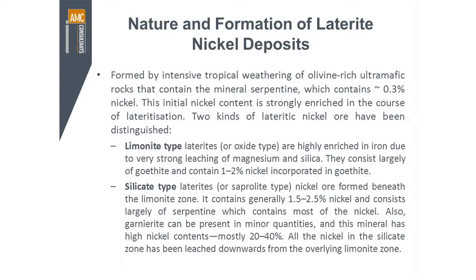There are two general kinds of lateritic nickel deposits. We have the limonite types — you heard the word limonite from the iron ore section, so it's a dominantly iron mineral but it contains significant amounts of nickel. These deposits are highly enriched in iron due to the strong leaching of magnesium and silica, and they consist of goethite which contains about 1% to 2% nickel in these areas.